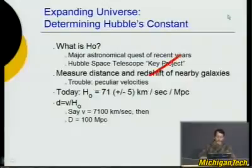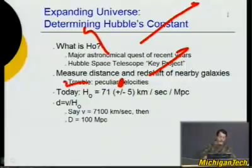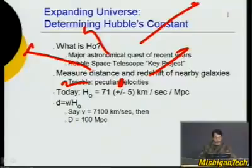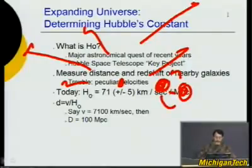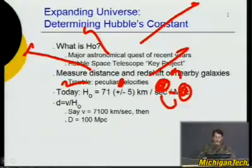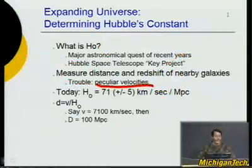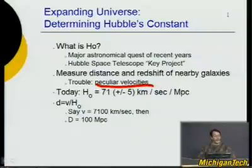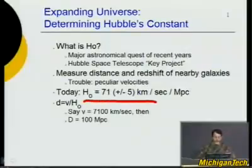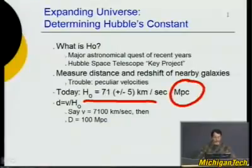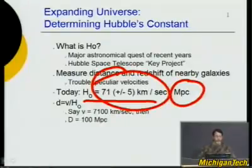To a first approximation, everything expands in the universe, and the further away you are, the faster you move away from any place, which is the center of the universe. However, galaxies near each other tend to attract and orbit each other, developing velocities not part of the Hubble expansion — these are called peculiar velocities. Through increasingly better telescopes and data analysis, we've now determined the expansion rate is 71 plus or minus 5 kilometers per second per megaparsec. So if something is 1 megaparsec away, it travels on average 71 kilometers per second away from us.